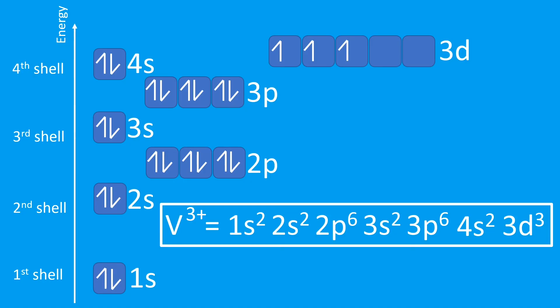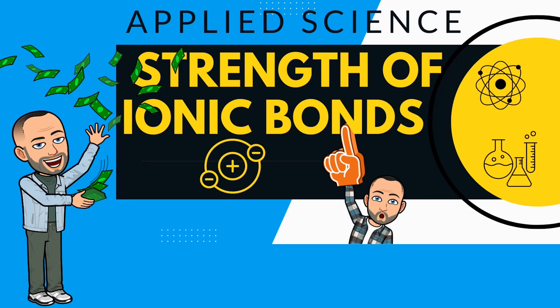The first two electrons to be lost are from the 4s subshell — the 4s filled before the 3d, and it will also empty before the 3d. So those two electrons are gone and the 4s subshell has now been removed. I still need to lose a third electron to become 3+, so the next electron is removed from the 3d, making it 3d². The electron configuration for V³⁺ is therefore 1s² 2s² 2p⁶ 3s² 3p⁶ 3d².